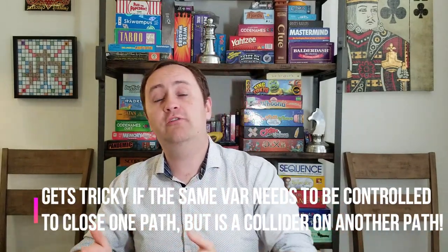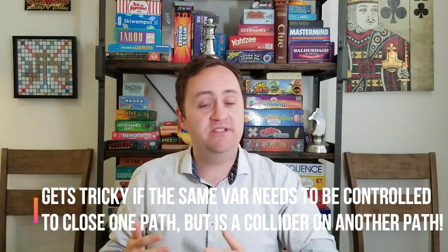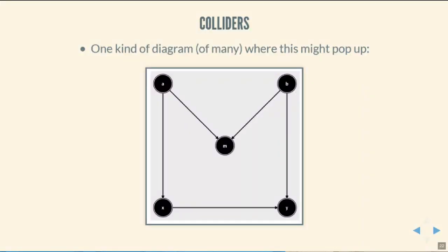It's not the end of the world — maybe you could control for a different variable somewhere else on that path. In this diagram, for example, if you controlled for m for some reason, you could still identify the causal effect of x on y by also controlling for either a or b. Controlling for m would open the path back up, but controlling for a or b would close it down again.